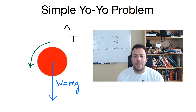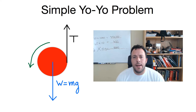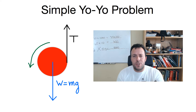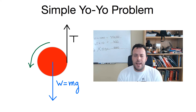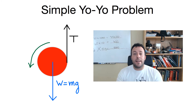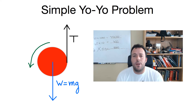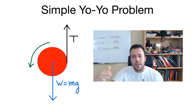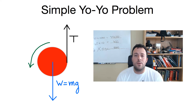Hi everybody. Today I want to look at a nice rotational dynamics problem. It's a simple yoyo problem — I've got it sketched out here on the whiteboard. We have a cylinder with a particular moment of inertia. There is a rope or string wound around that cylinder and you're simply going to drop the object. The weight is pulling it down and you've got the tension acting on the side. We'll calculate how fast the center of mass of the yoyo is moving after it falls a certain height h. We can do this problem two different ways: Newton's laws or conservation of energy. So we'll do it both ways.